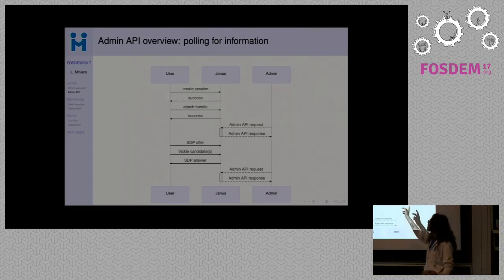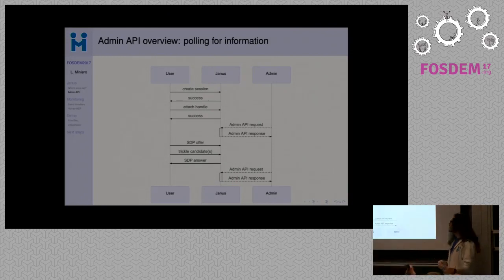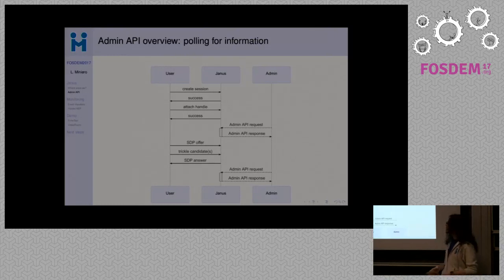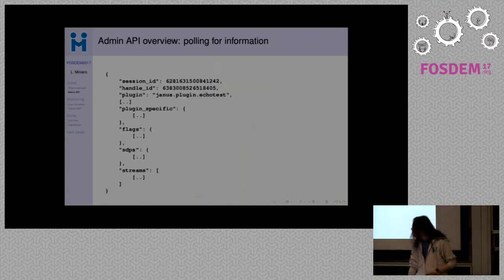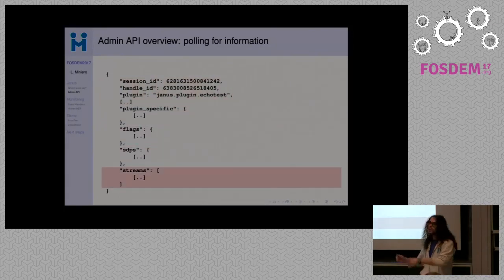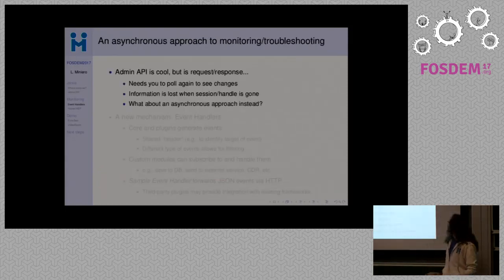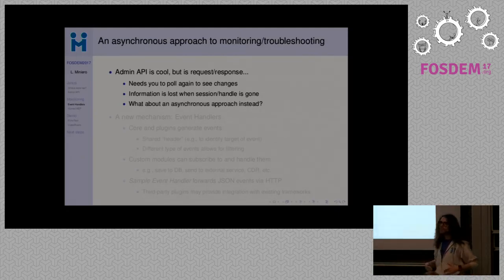The admin API really works just as polling: at any time during the peer connection you can ask Janus for information, and it will return a snapshot of whatever is happening — how many packets were sent, the current state of ICE, DTLS, and all those kinds of things. If you are familiar enough with all those things, you can look at those snapshots, one or more over time, to figure out what's going wrong. This is far from the ideal solution.